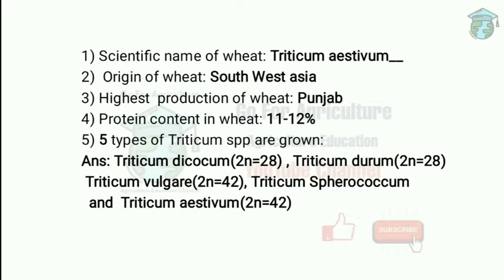A common question is: what are the five types of Triticum species that are grown? First, we classify Triticum dicoccum and Triticum durum together because of the same chromosomal number, that is 2N equal to 28. Triticum dicoccum means emmer wheat, grown in some parts of southern states like Maharashtra.